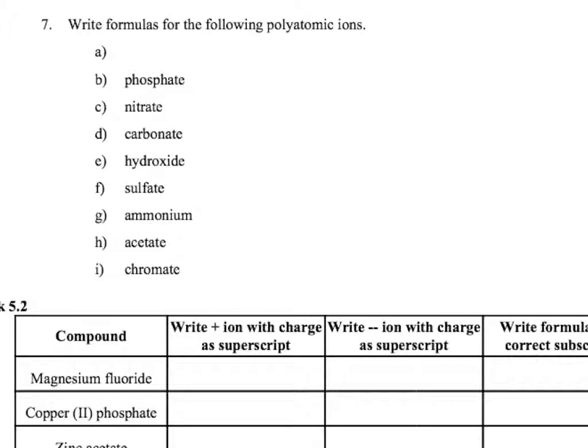Finally, number seven here, for you again it's number four. Write the formulas for the following polyatomic ions. This is really easy, just flip your periodic table over and they're right there. We'll start with, or we'll just do carbonate here.